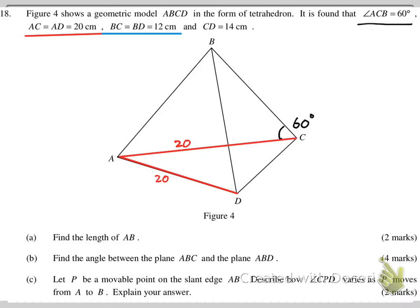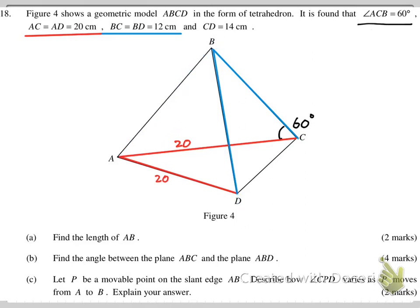We have BC equals BD. So this is BC in blue, and we have BD right here. Be very careful — don't put the other line to be 12. Only these two are 12. And finally, we have CD — the yellow one — is 14. So this yellow one is 14.